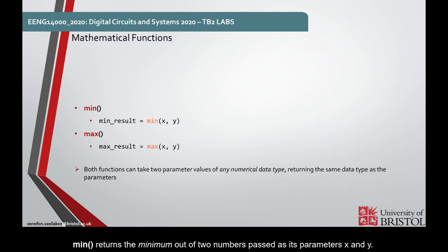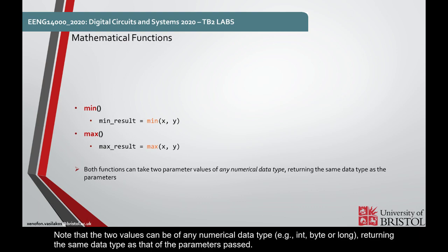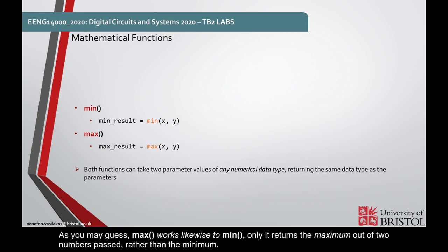min returns the minimum of two numbers passed as its parameters x and y. Note that the two values can be of any numerical type, for example int, byte, or long, returning the same data type as that of the parameters passed. As you may guess, max works likewise to min, only it returns the maximum of two numbers passed rather than the minimum. Again, the two values passed can be of any numerical data type.